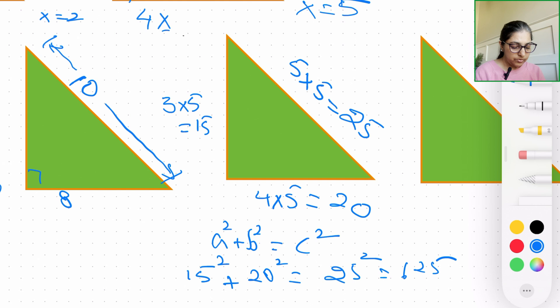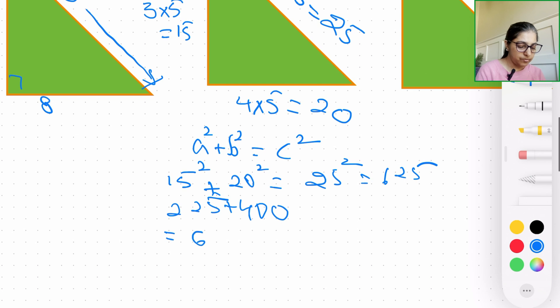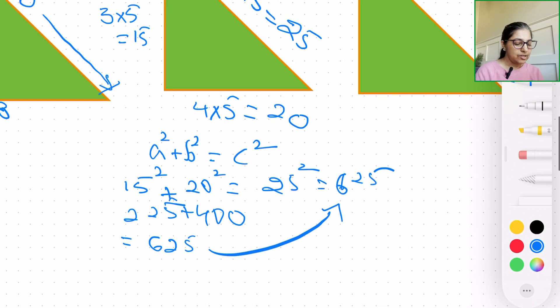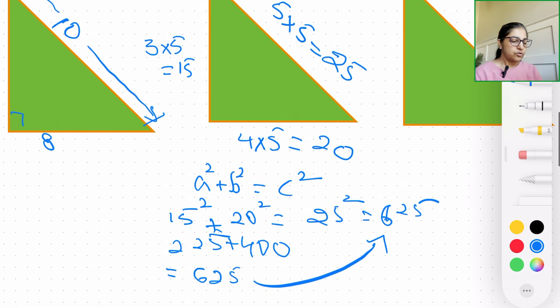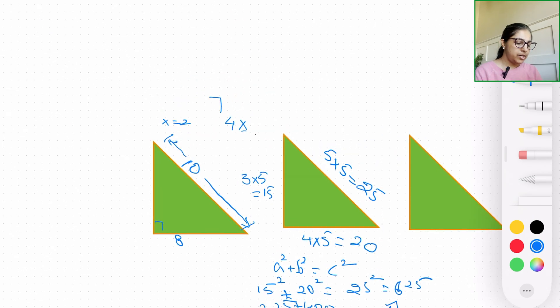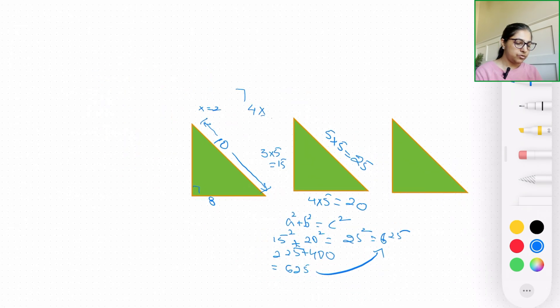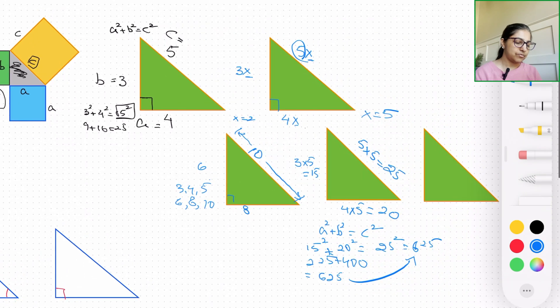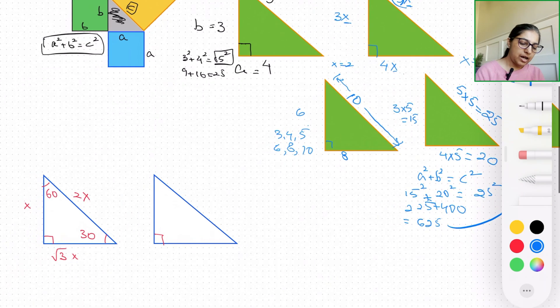Which is nothing but 625 right here. And if you calculate this, 225 + 400, I already know this offhand, so that will give you the answer of 625, which is exactly 625, meaning 25². So we can come up with a variety of combinations for the multiples of a 3-4-5 type of special right triangle. Now moving on, there are other two types of special right triangles which I have written down here.